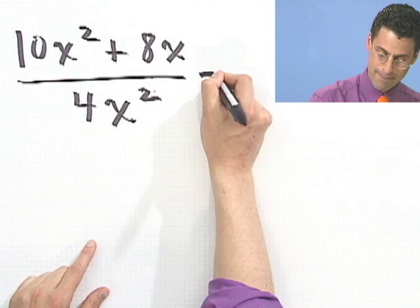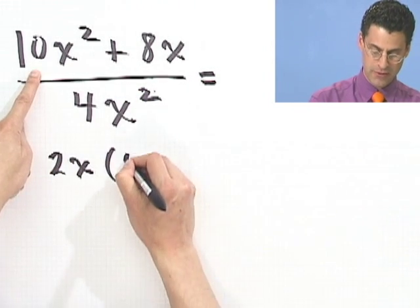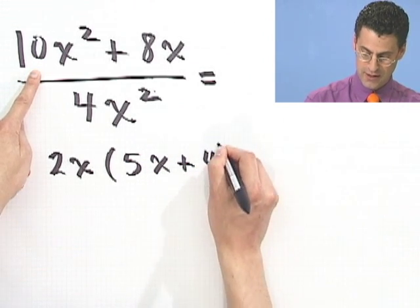OK. Well, I see I can pull out a 2 on the top, certainly. And also, I can pull out an x. Let me pull out a 2x on top. That would leave me with a 5x here. And it would leave me with a 4 here.